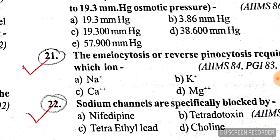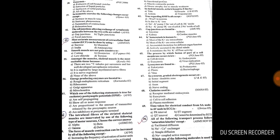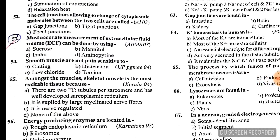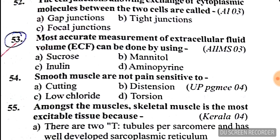Question number 22: sodium channels are especially blocked by — see all four options carefully — the answer is B, tetrodotoxin. Question number 53: the most accurate measurement of extracellular fluid volume can be done by using —